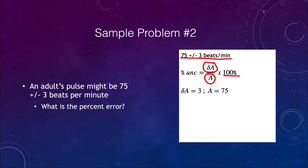Delta a is the error, which would be three beats per minute. A itself would be 75 beats per minute. We put those numbers in here. Delta a goes in up top, a goes in at the bottom. If we replace those in our equation, then the percent uncertainty equals three divided by 75 times 100%, or 0.04 times 100%, or our final answer, 4% error. So the percent error would be 4%.